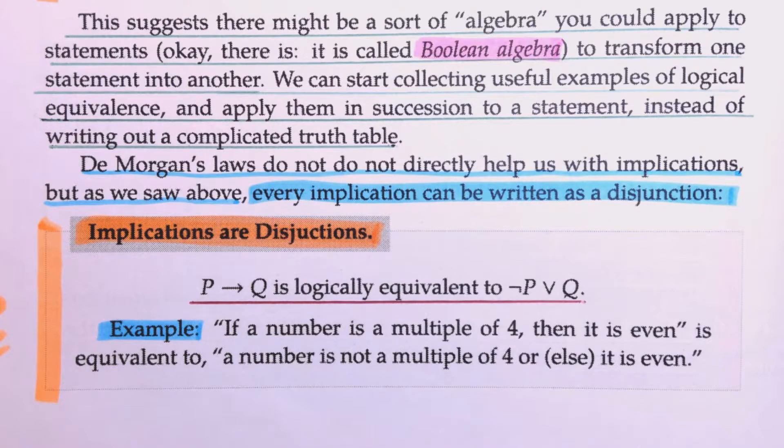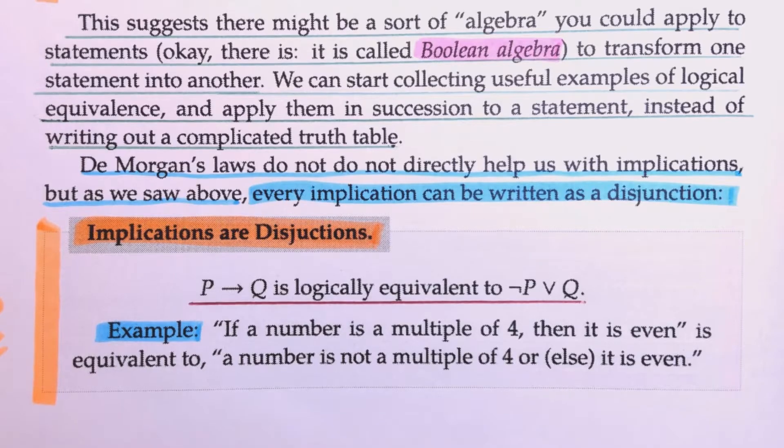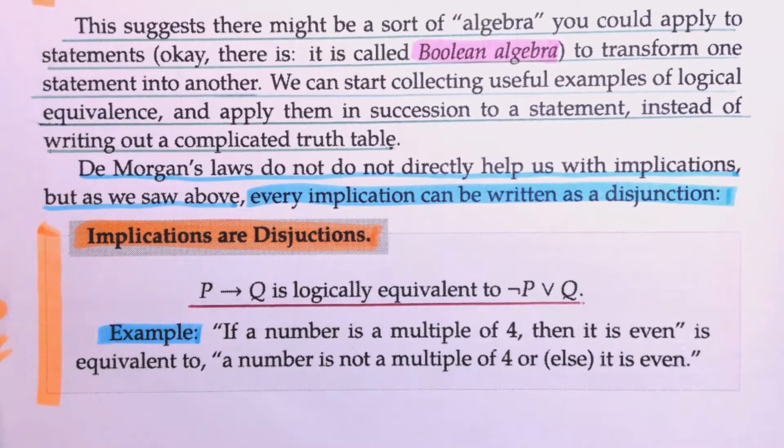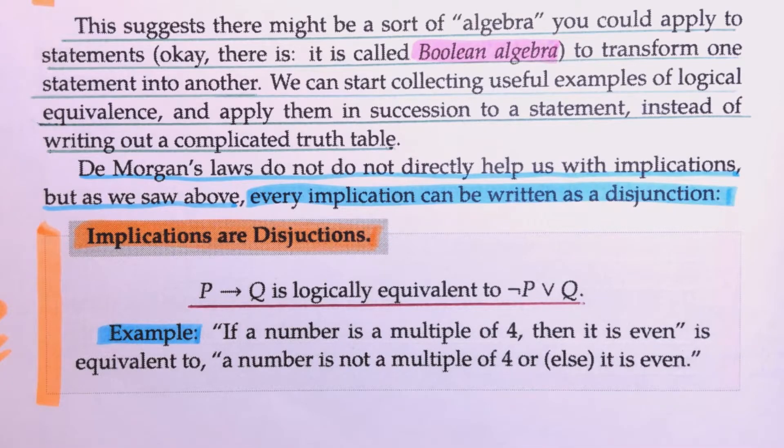So we can ask, what does DeMorgan's Laws do for us? And this is how the book replies. It says, this suggests that there might be some sort of algebra that you could apply to statements. And then it immediately tells us what that algebra is, and it's Boolean algebra. So, you can apply this to statements to transform one statement into another. We can start collecting useful examples of logical equivalents, and apply them in succession to a statement, instead of writing out a complicated truth table.